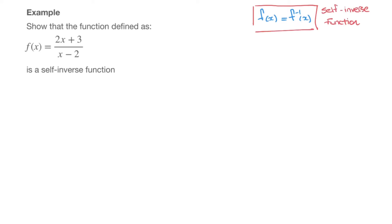A typical example of a self-inverse function could be the function f of x which equals 1 over x. Indeed, if we try and find this function's inverse, we're going to find that it's equal to 1 over x. And let's actually show that.